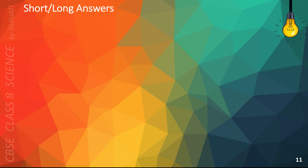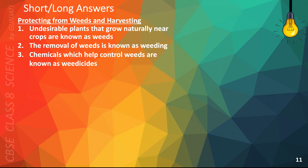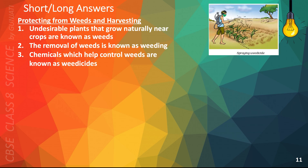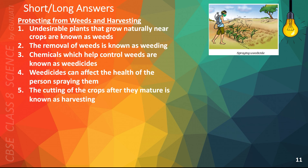As I mentioned earlier, this is the slide where I have arranged the multiple-choice questions in such a way that it will help you answer long or short questions on protection from weeds and harvesting. The following points will help you: Undesirable plants that grow naturally near crops are known as weeds. The removal of weeds is known as weeding. Chemicals which help control weeds are known as weedicides. Weedicides can affect the health of the person spraying them.